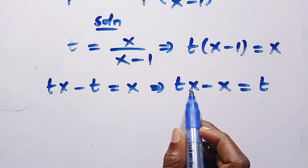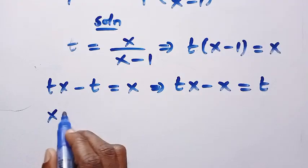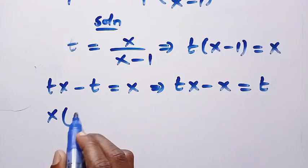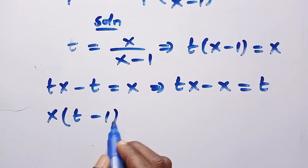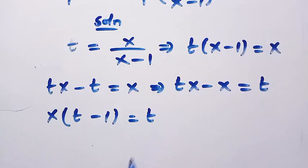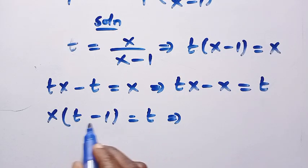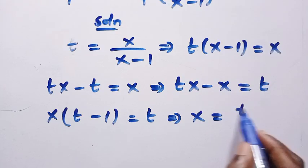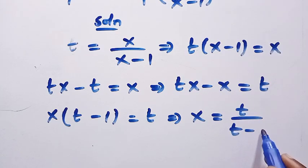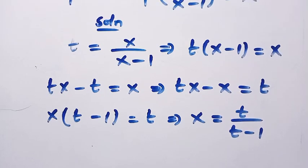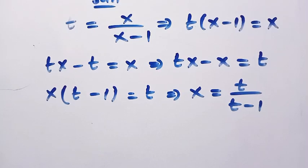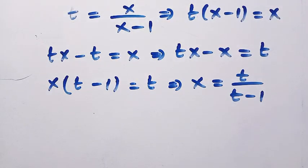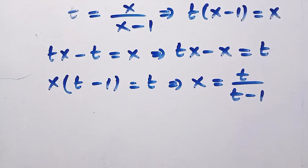Factoring out x, we have x times bracket t minus 1 equals t. Dividing both sides by t minus 1, we make x the subject: x equals t divided by t minus 1. Coming back to the main function, anywhere we see x we replace it with t divided by t minus 1.